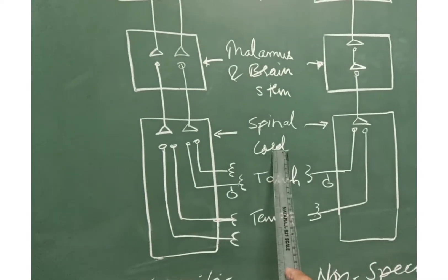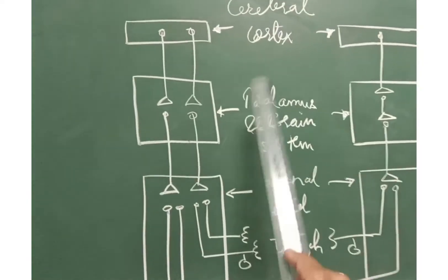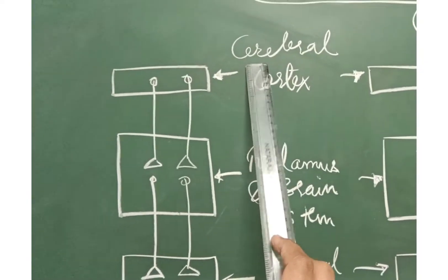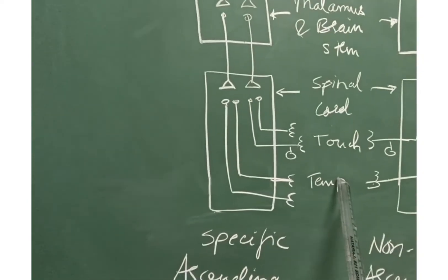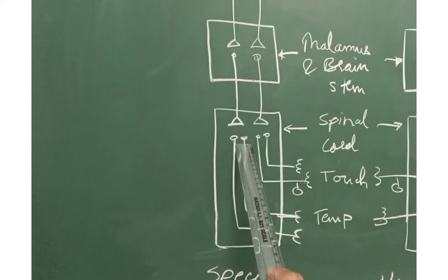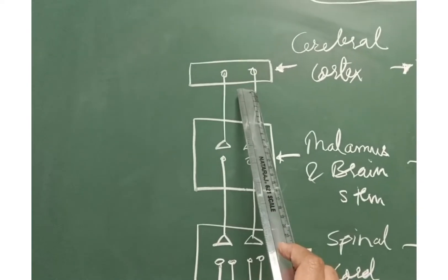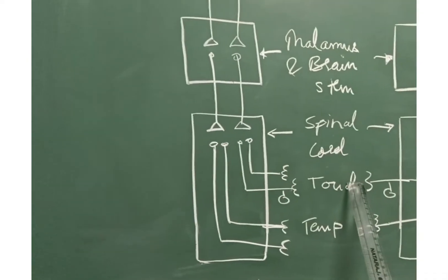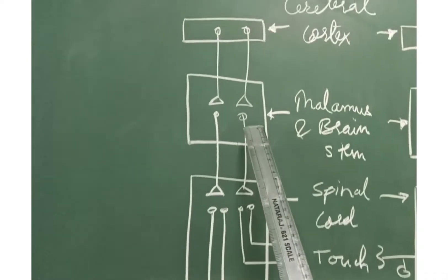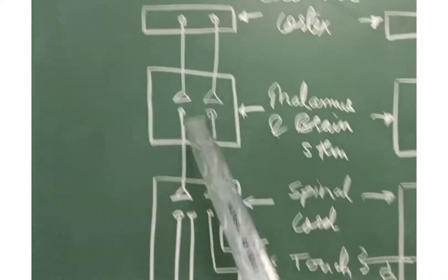Now let's consider this is your spinal cord, this is thalamus and brainstem, and this is your cerebral cortex. Ascending pathways in the spinal cord and the brain that carry information about single type of stimuli are known as specific ascending pathways. Examples are touch and temperature as you can see here.